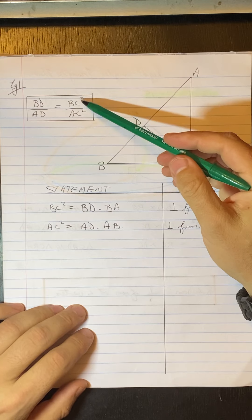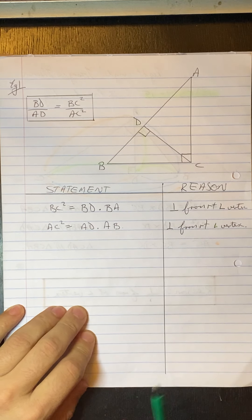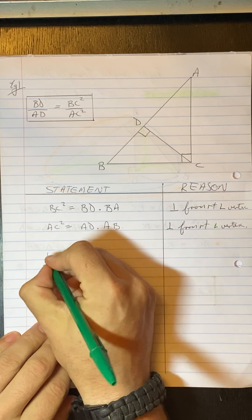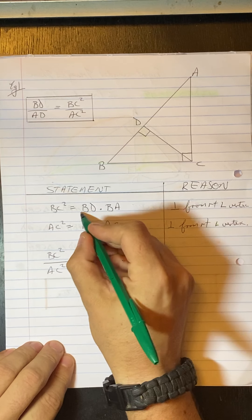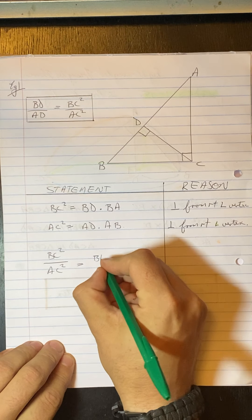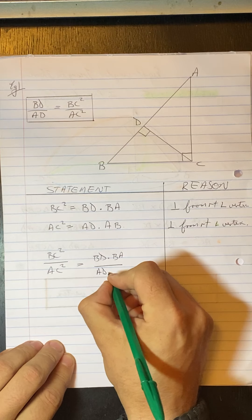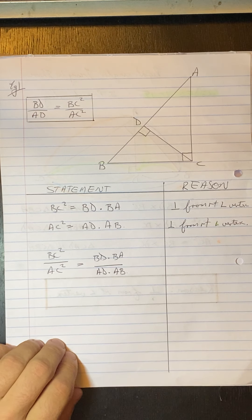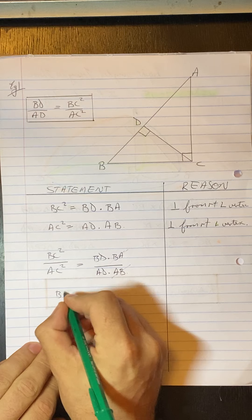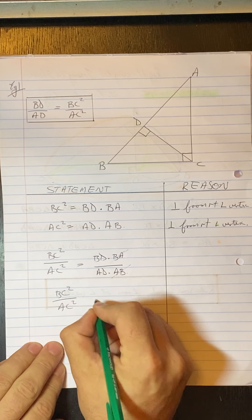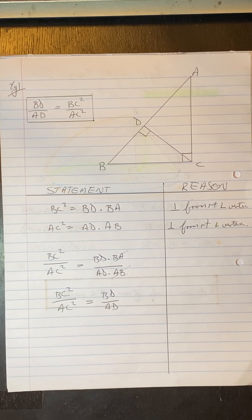To get BC squared over AC squared, we divide the two expressions: BC squared over AC squared equals BD times BA, all over AD times AB. The BA cancels with the AB, leaving BC squared over AC squared equals BD over AD — which is exactly what was required.